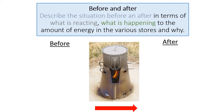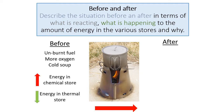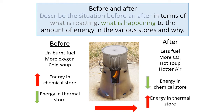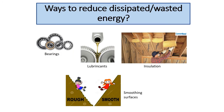Here is an example. We will describe the situation before and after in terms of what is happening to the amount of energy in the various energy stores. Before: unburned fuel, more oxygen, cold soup — chemical energy is greater than energy in the thermal store. After: the fuel is less because it has been burnt, more carbon dioxide is produced, hot soup, hotter air — so the chemical energy store is less but the thermal energy store is higher.